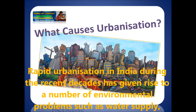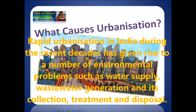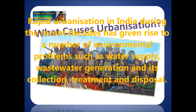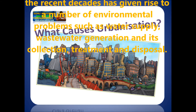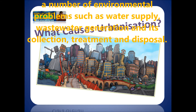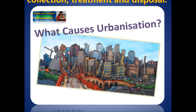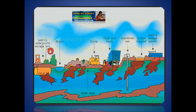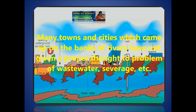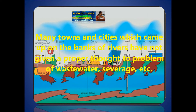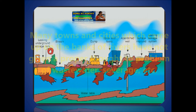Rapid urbanization in India during the recent decades has given rise to a number of environmental problems such as water supply, wastewater generation, and its collection, treatment and disposal. Many towns and cities which came up on the banks of rivers have not given proper thought to the problems of water waste and sewage.